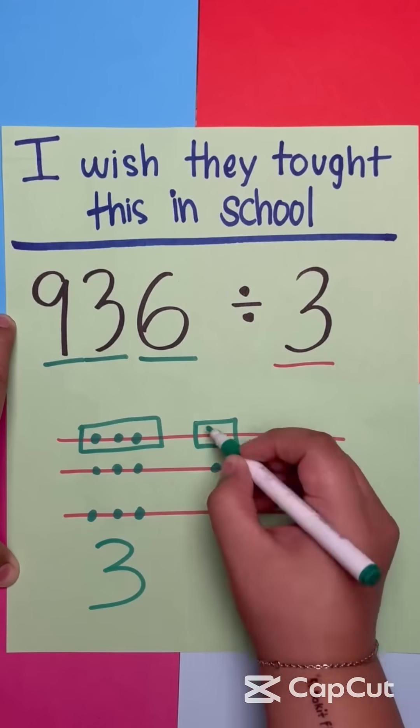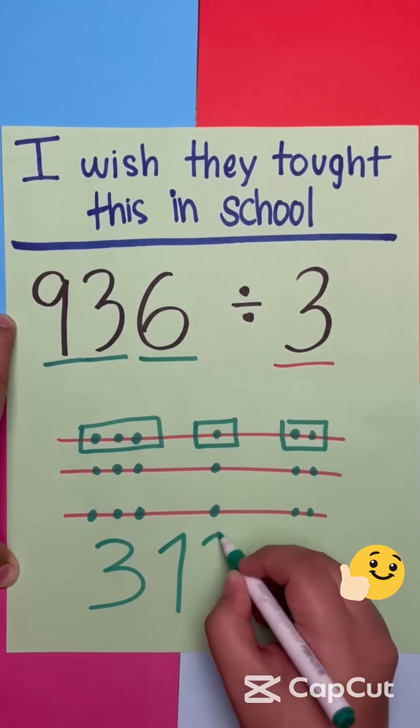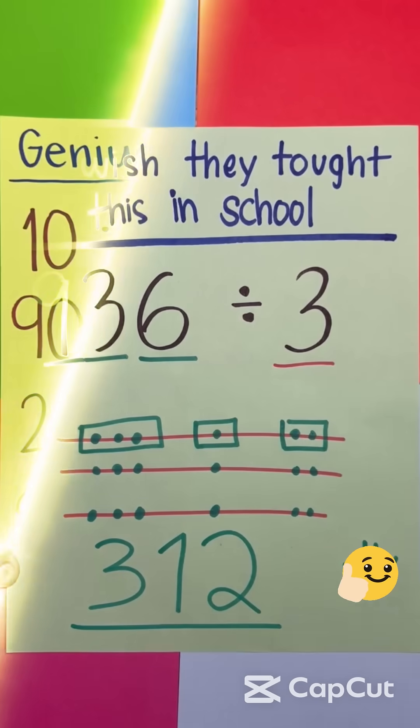Number three, why did the student do multiplication problems on the floor? Well, the teacher did say not to use tables.